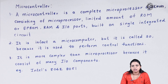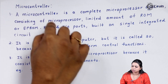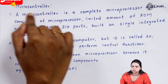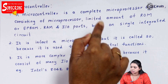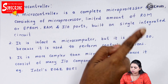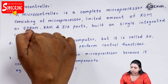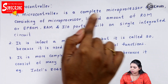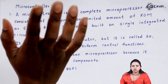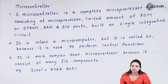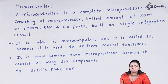Microcontroller — let us see a definition. A microcontroller is a complete microprocessor system consisting of a microprocessor, a limited amount of ROM, EPROM, RAM, and input-output ports, all built on a single integrated circuit. So you can say a microcontroller has a limited amount of memory compared to a microprocessor.